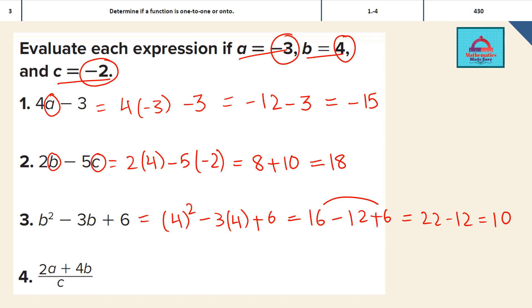Last but not the least, we calculate the expression 2a plus 4b divided by c. Here all three variables are there. I am going to put in place of a the value minus 3, in place of b the value 4, and in place of c the value minus 2. Let's calculate the numerator of this fraction first. 2 multiplied with minus 3 gives me minus 6, plus 4 multiplied with 4 is 16, divided by minus 2. So 16 minus 6 divided by minus 2. On simplifying, this gives me 10 divided by minus 2. The final answer is minus 5.